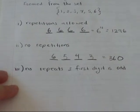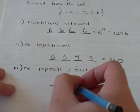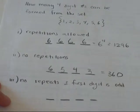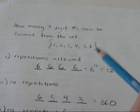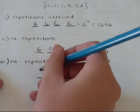In part three, no repeats and the first digit is odd. My options for odd are 1, 3, and 5, so I have 3 to choose from. That will make the first digit odd. So 3.